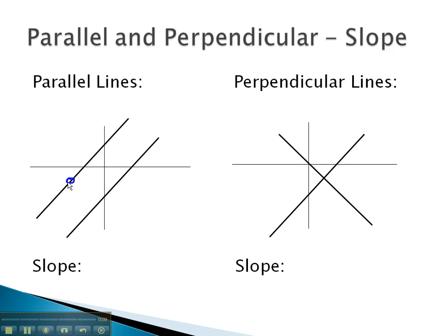If slope is a measure of steepness and one line rises 3 and runs 2, to be parallel, it must also have the same steepness to avoid intersection, rising 3 and running 2. Notice the two slopes are both 3 halves. Both slopes are the same. Parallel lines will always have the same slope.